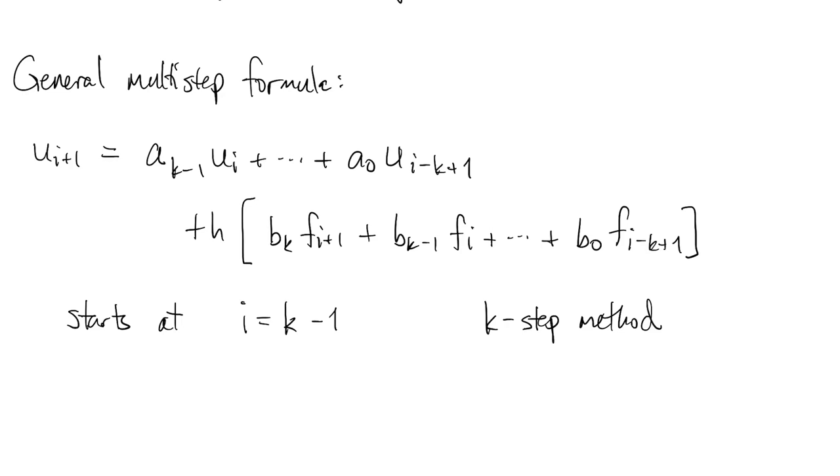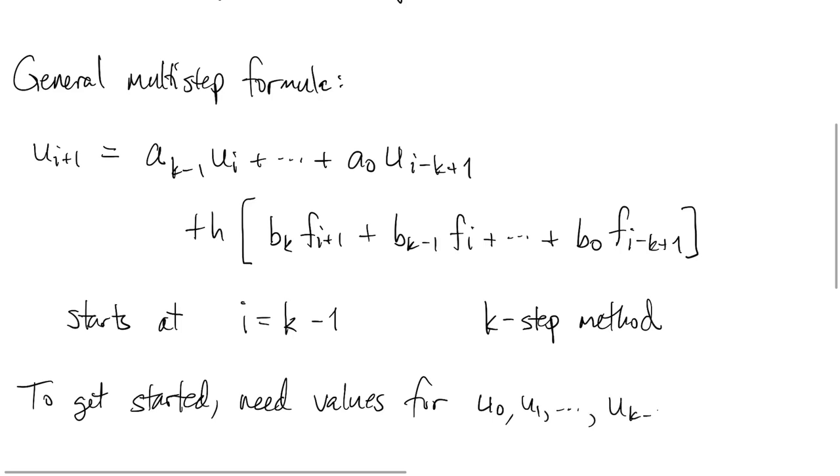In order to do that first step with i equals k minus 1, we would have references to u0, u1, and so on up to uk minus 1. So we need these starting values to get going. u0 comes from the initial conditions. These others usually come from a Runge-Kutta formula. Once you've got those, then you use the multi-step formula the rest of the way.